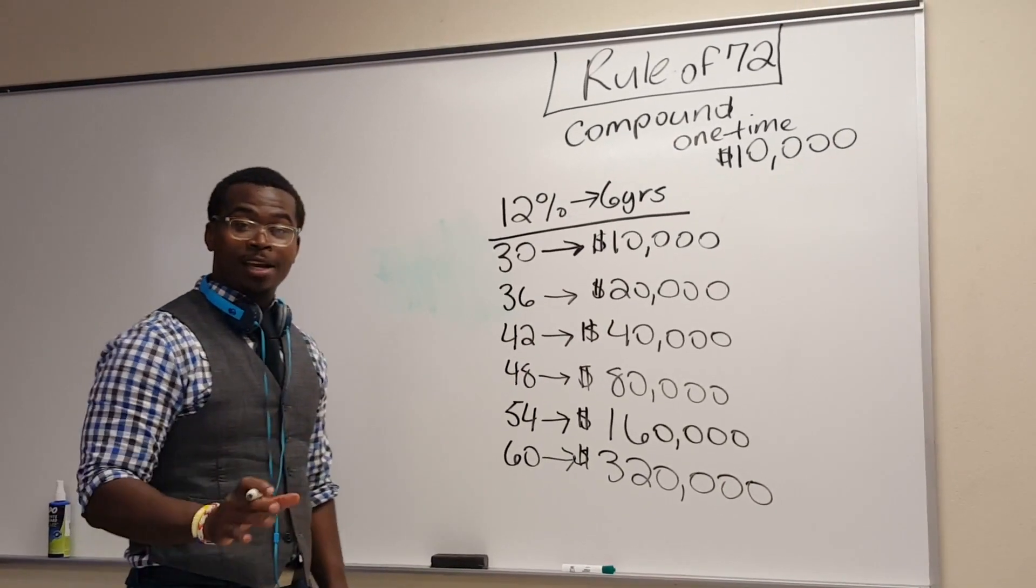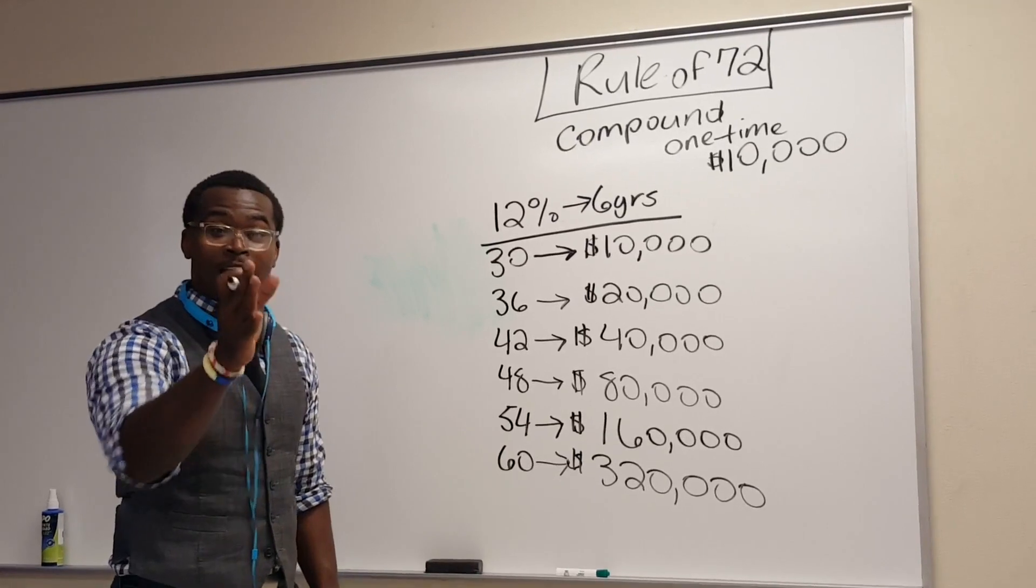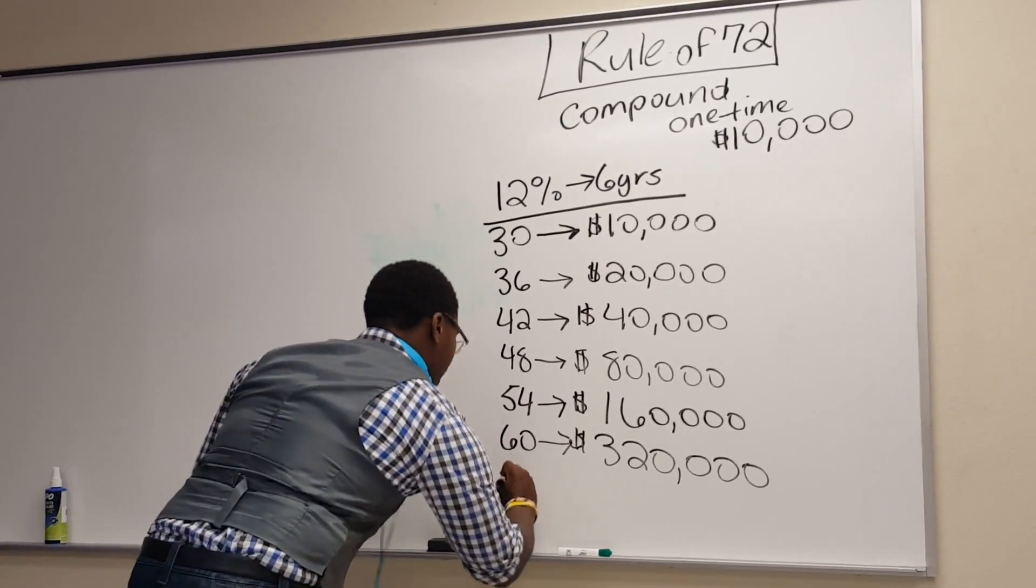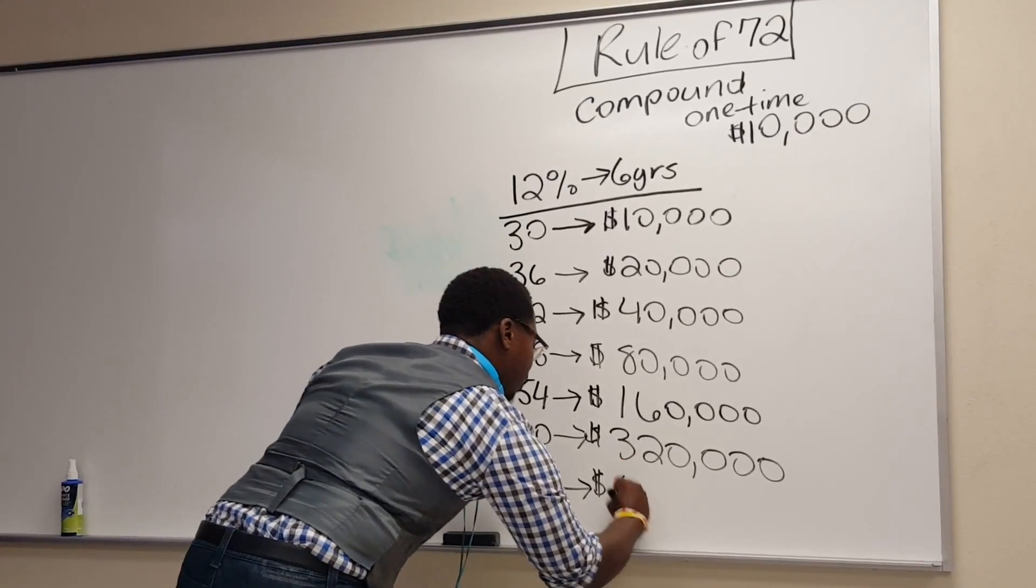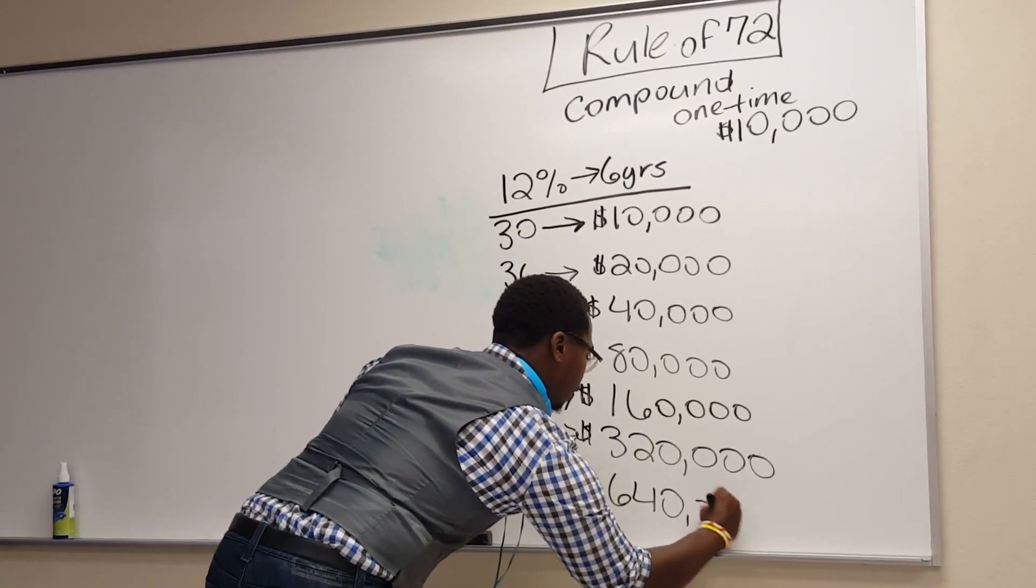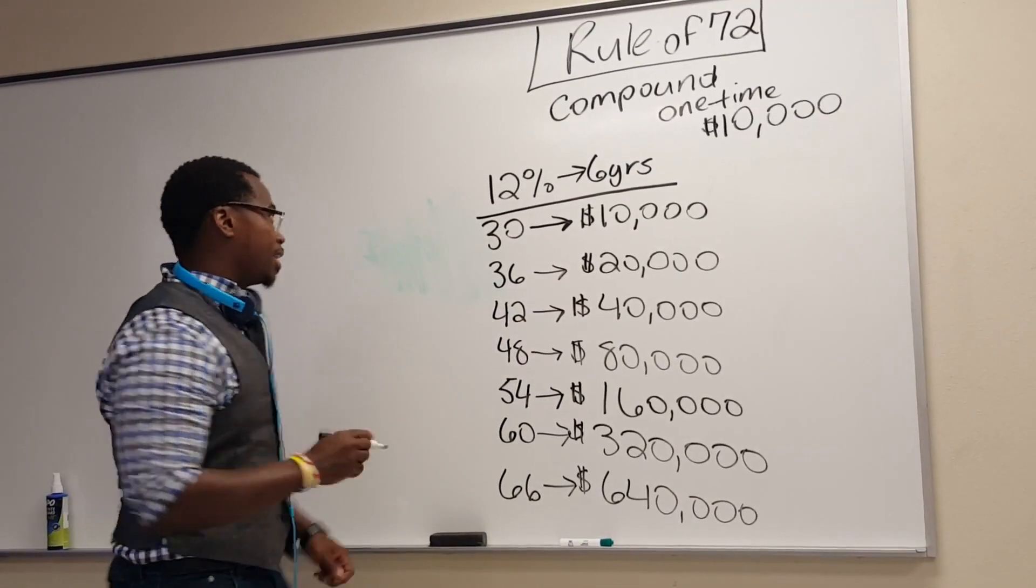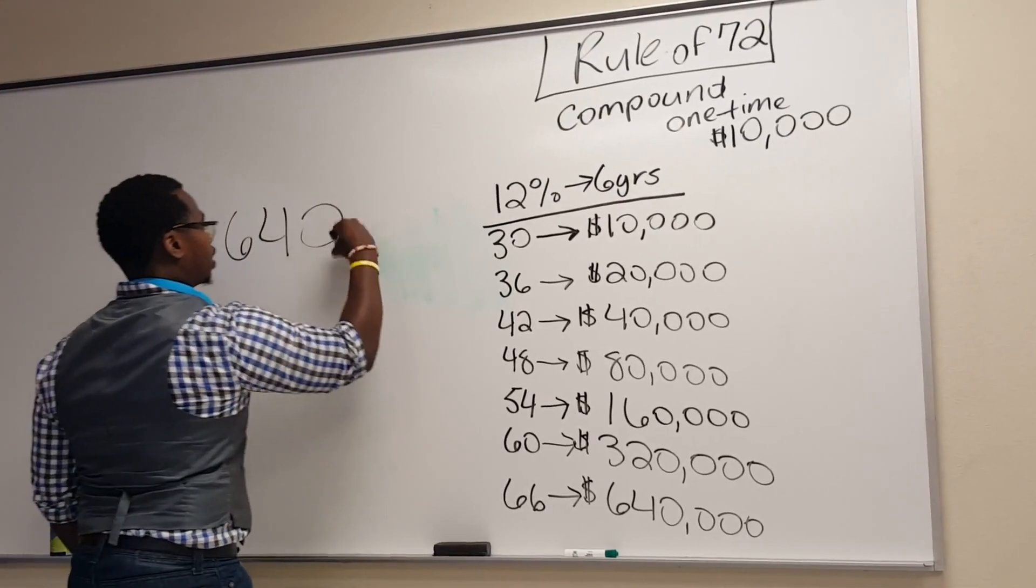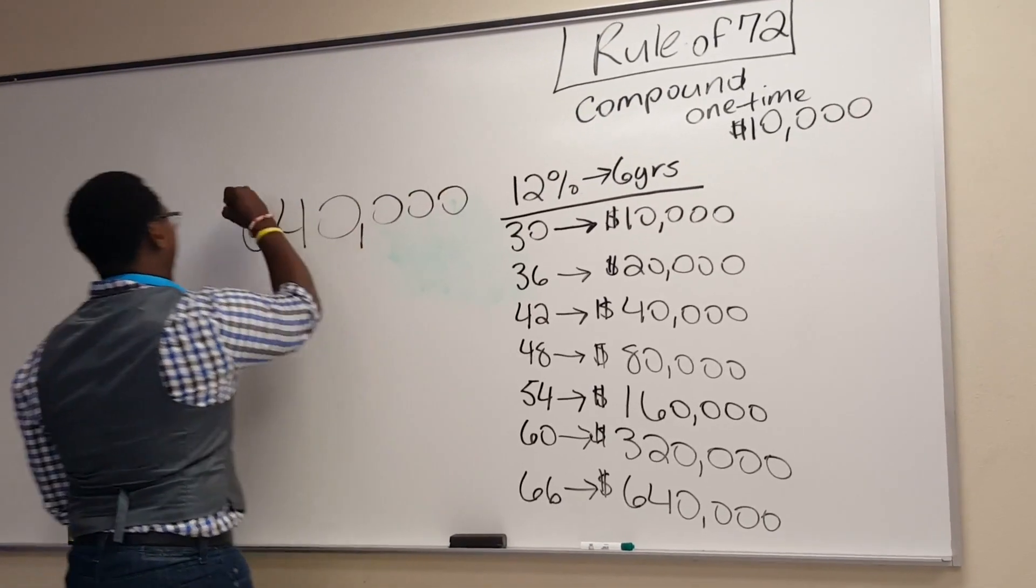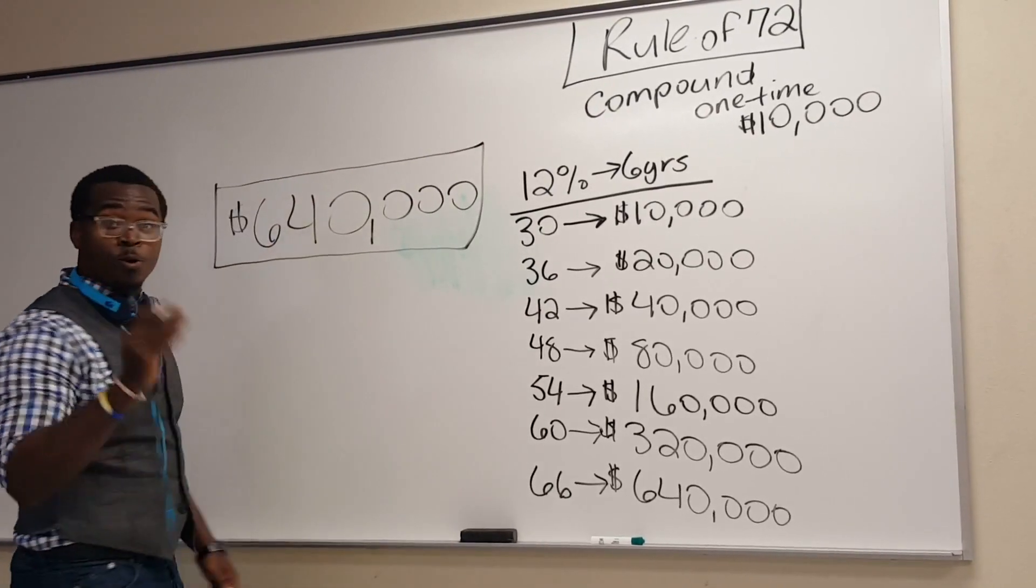Now, I want you all to guess. At your retirement age, let me show you what the bank made off of you. At age 66, which is the retirement age for most Americans, the bank made $640,000 off of whose money? I want to write this again. The bank made $640,000 off of your money.